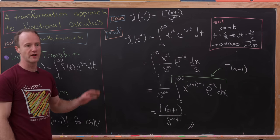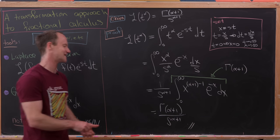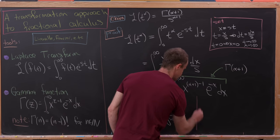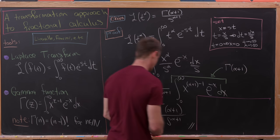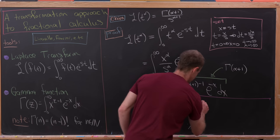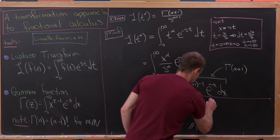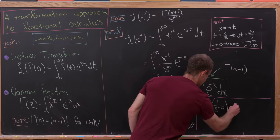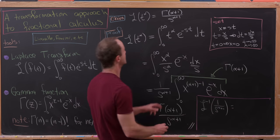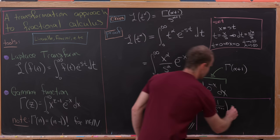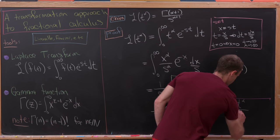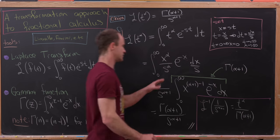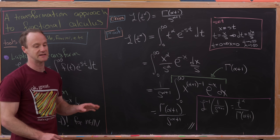We'll hold onto that result and also write down its inverse version: the inverse Laplace transform of 1 over s to the alpha plus 1 is equal to t to the alpha over gamma of alpha plus 1. Those are the two formulas we'll need going forward.